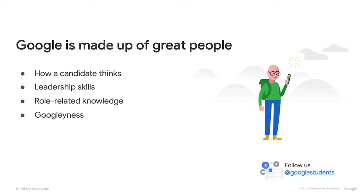Google is made up of incredible people and there are some core central tenants we're looking for as we're hiring folks. One is how a candidate thinks — how they use data, logic, and reasoning. Two is leadership skills, which doesn't necessarily come in the form of a title; it means emergent leadership and taking proactive initiatives. Three is role-related knowledge, meaning transferable skills. And lastly is Googliness — intellectual curiosity, collaboration, and thinking at scale. Today we're focusing on how a candidate thinks.